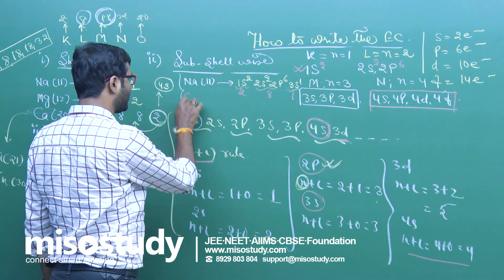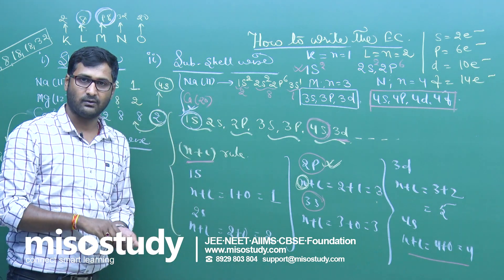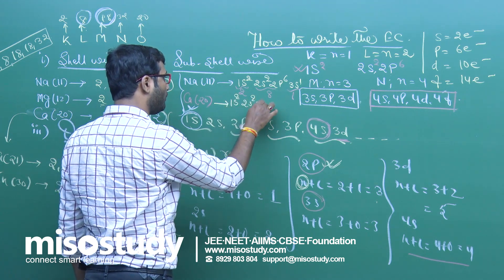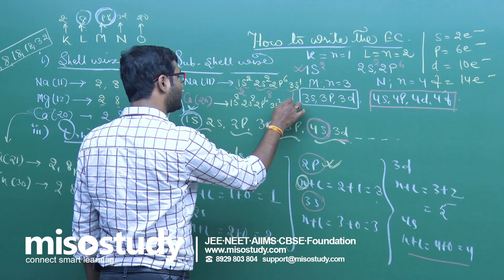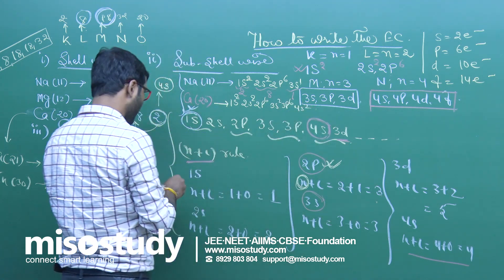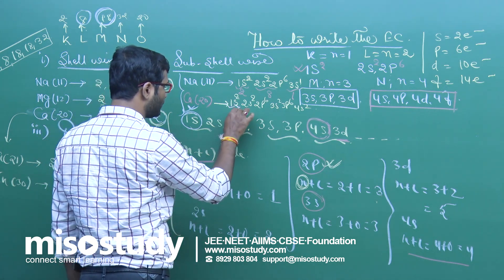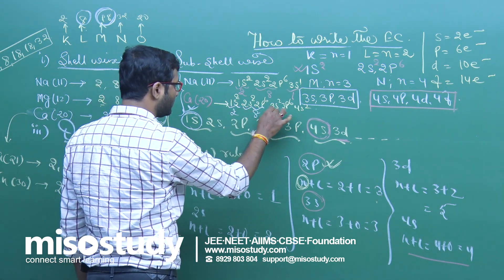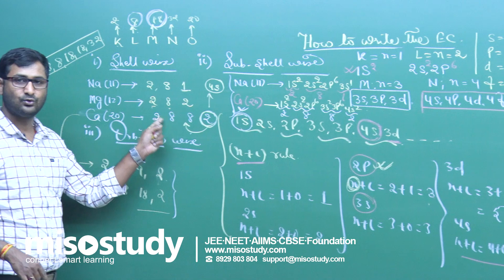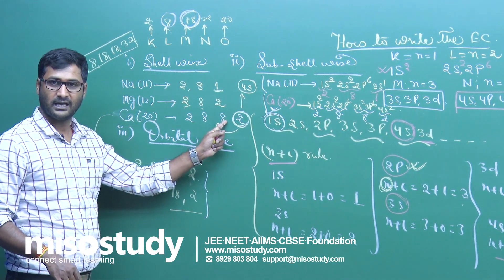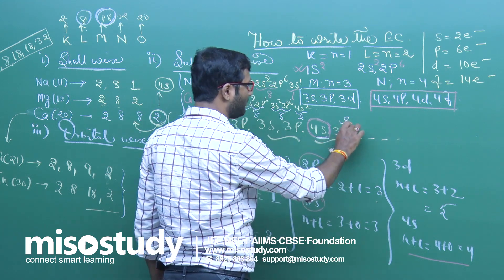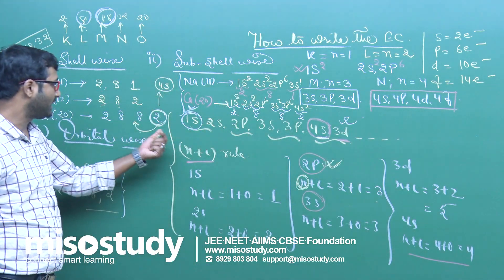Sub-cell wise for calcium: 1s², 2s², 2p⁶, 3s², 3p⁶, then 4s² — not 3d, because 4s has a minimum n+l value of 4 compared to 3d's value of 5. Comparing with cell-wise: 2, then 2+6=8, then 2+6=8, then 2. So that is 2, 8, 8, 2 — not 2, 8, 10.